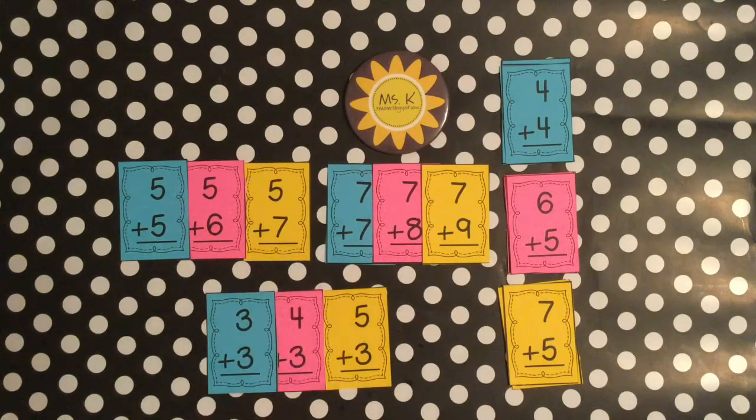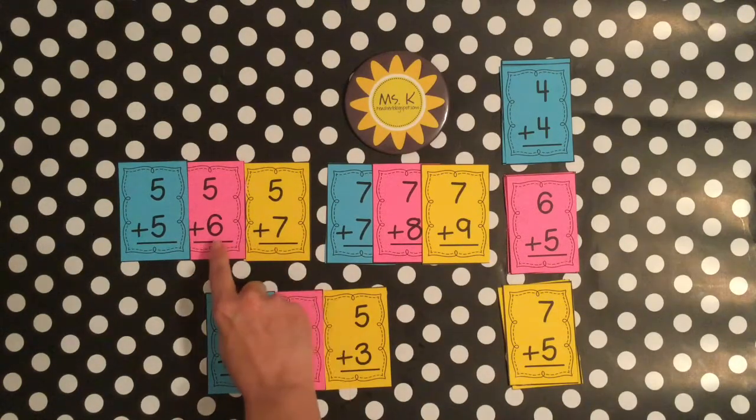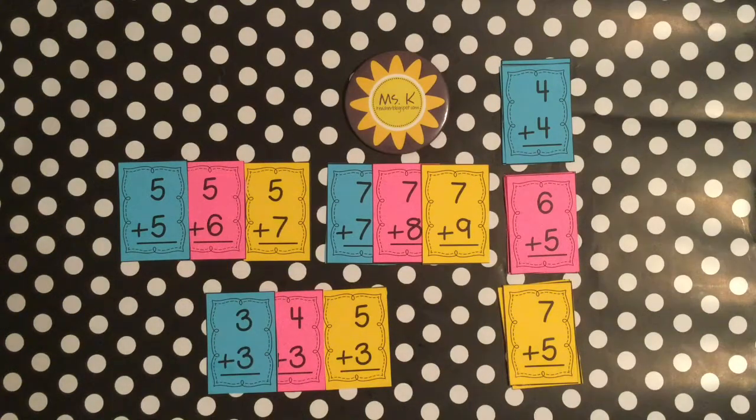Ten, eleven, twelve. Or they may say, you know what, I've learned my five plus five and my five plus six, and so I know that five plus seven is just one more than my five plus six. So they can learn it in a variety of ways.